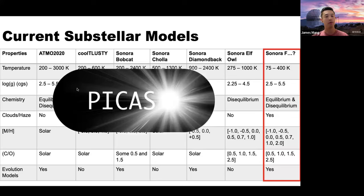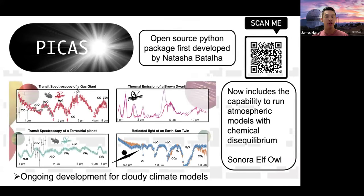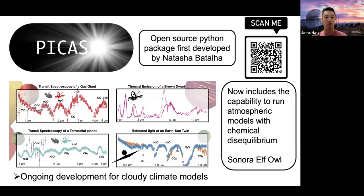We're going to do this with Picasso. Originally used for generating transit spectra along with thermal emission and reflected light spectra, it now includes the ability to run atmospheric climate models — the same code used to run the pressure-temperature profiles for the EDDYSED clouds, but now in Python. Most importantly, Picasso's climate model now includes the capability to run atmospheres in chemical disequilibrium, which is important for these cold objects. I've been working on integrating the cloud parameterization and microphysical lessons into Picasso's climate models in both chemical equilibrium and disequilibrium to generate the next suite of Sonora models.